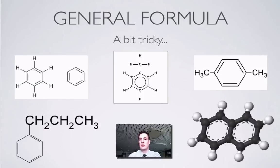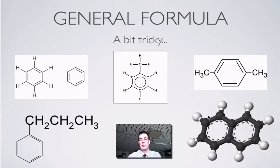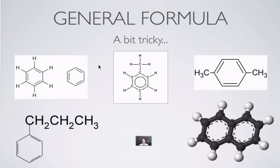It's difficult to write a general formula for aromatic compounds, so in a test or exam, all you really need to know is that they've got that six-membered ring with the alternating double bonds. Here's a collection of aromatic compounds: benzene, methyl benzene, dimethyl benzene, propyl benzene, and naphthalene — which has two of these six-membered rings with alternating double bonds. There's no single general formula because it depends on what's attached to the ring. Just remember that aromatic compounds have that ring of six carbons with the alternating double bonds — and that's it for hydrocarbons.